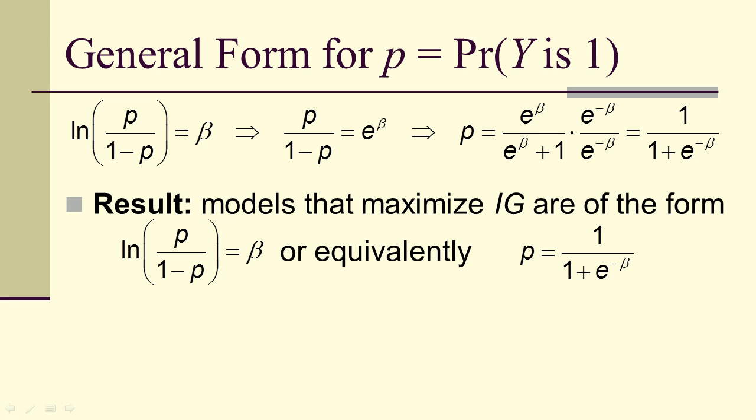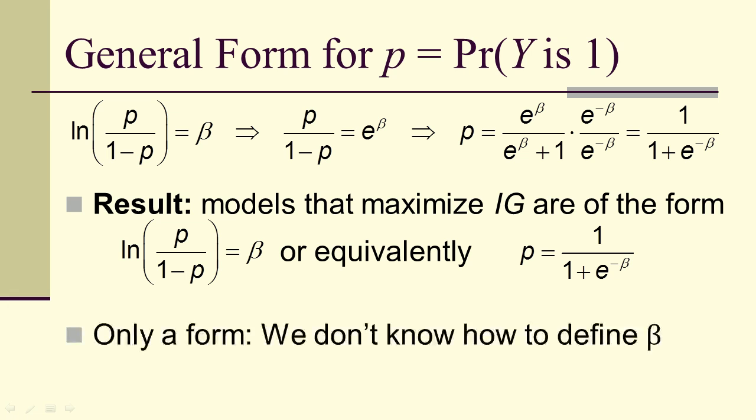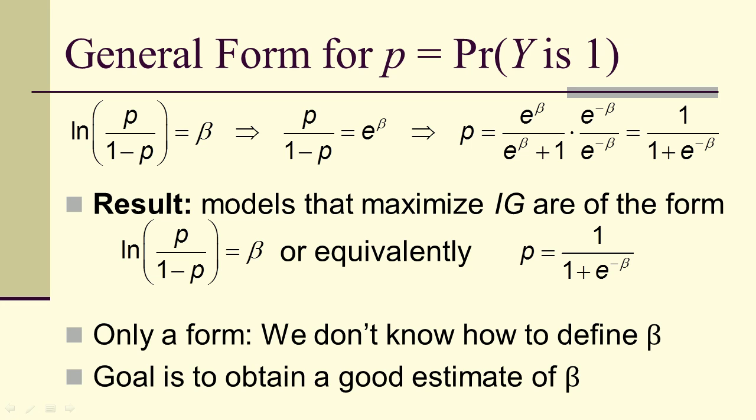So models that maximize the information gain are either the natural log of P over 1 minus P equals beta, or equivalently, P is 1 over 1 plus e to the negative beta. We still don't know what beta is, but now we know the form that we want to use. So we're going to start working now to get a good estimate or model of beta. Because we know this is the form of the probability and we can focus now on how to get the beta.